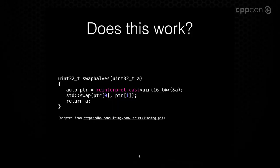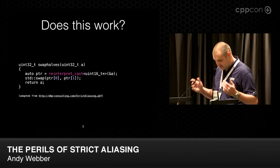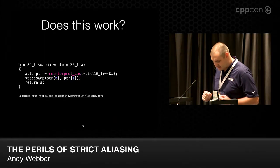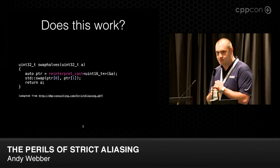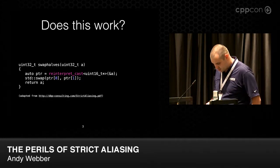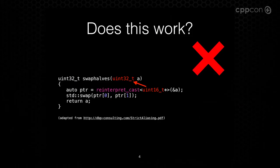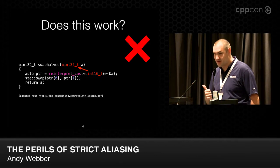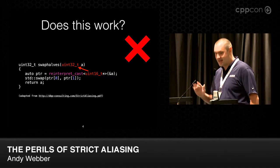Does this work? This code takes a uint32. We want to swap the two halves of it — this is kind of low-level C code you might have in your code base. So we take a pointer to a uint16 and we swap the two sides of it, the two array pieces. This does not work, or it's not guaranteed to work, because we are aliasing the 32-bit value through a 16-bit value. That's not a uint32 and it's not a char. Not guaranteed to work.